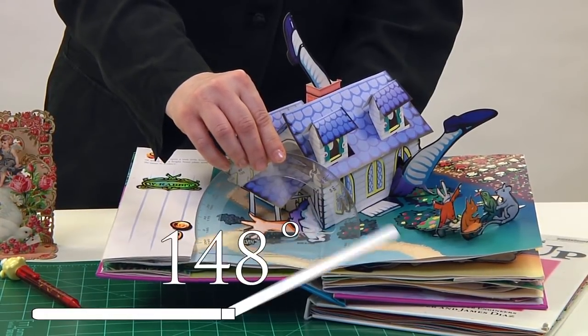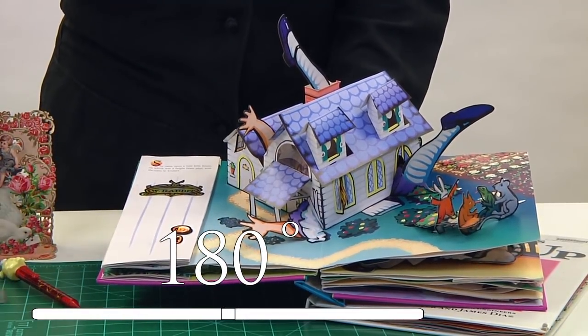Book spreads are normally 180 degrees, allowing the pop-up to be viewed from multiple sides and angles.